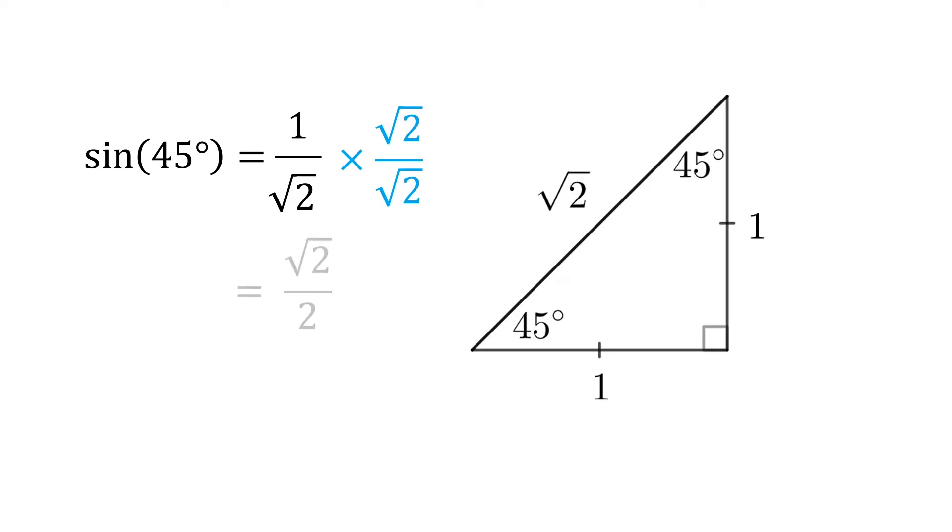Rationalizing the denominator, we could also write it as square root of 2 over 2. You could also tell that cosine 45 is also 1 over square root of 2, and tan 45 will just be 1.